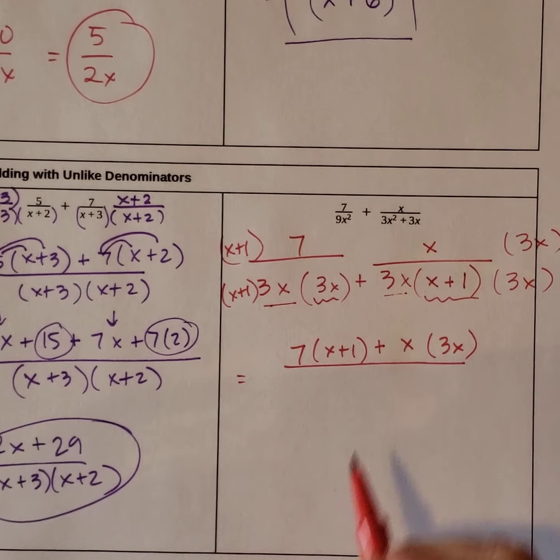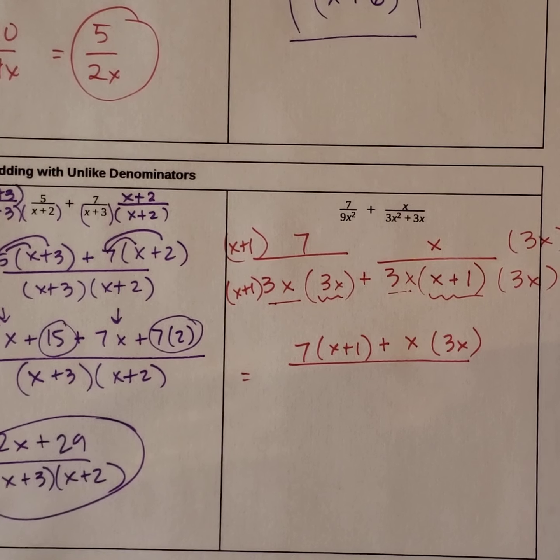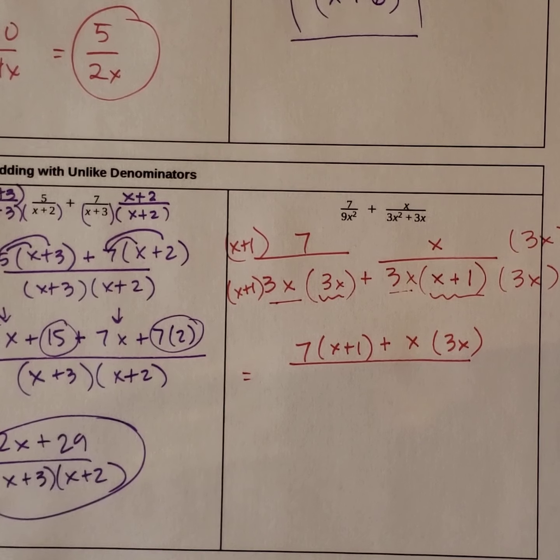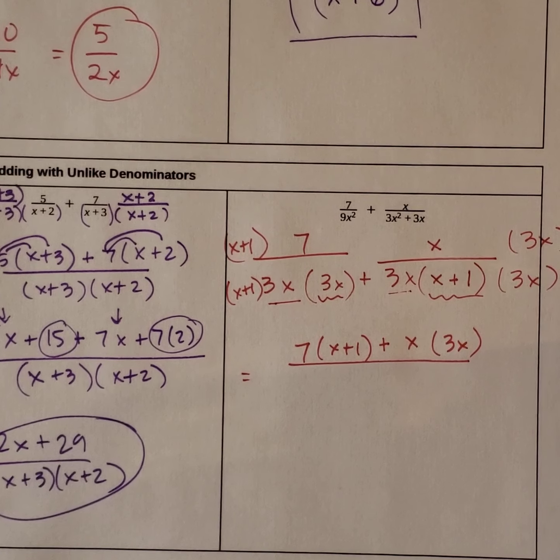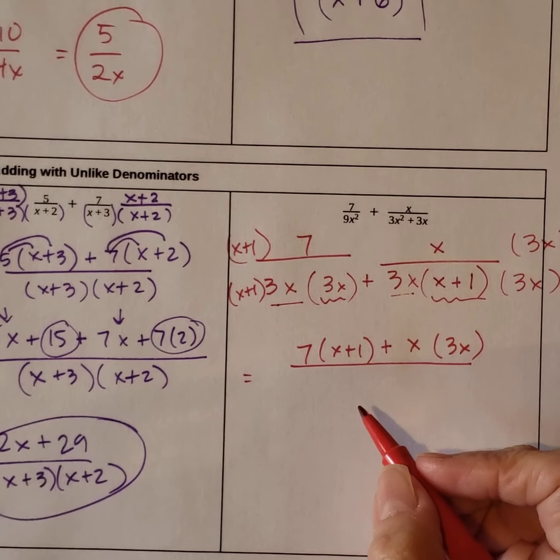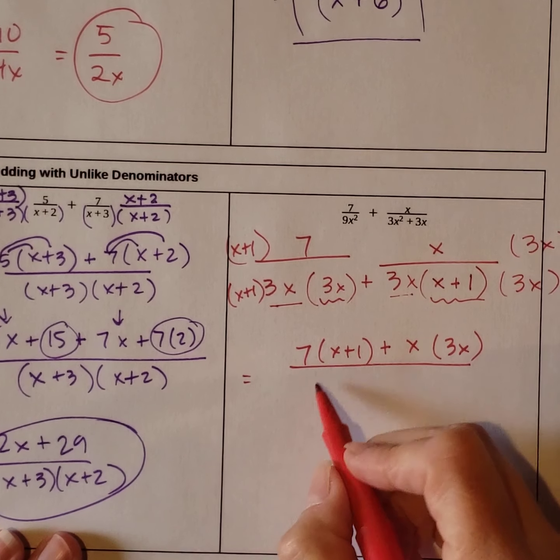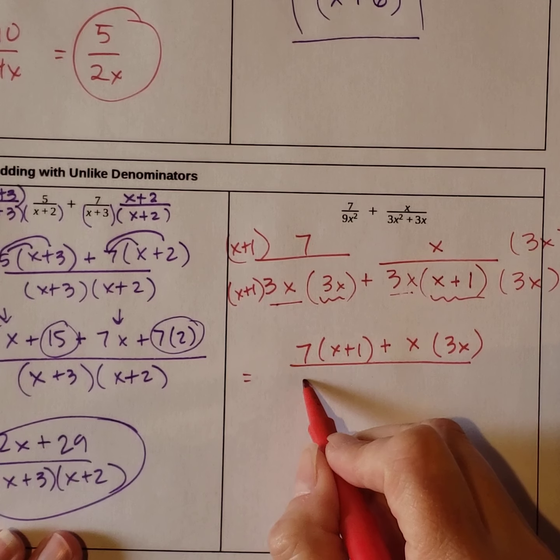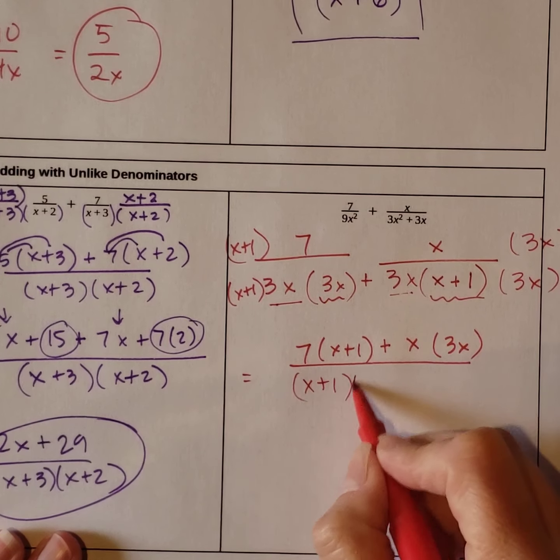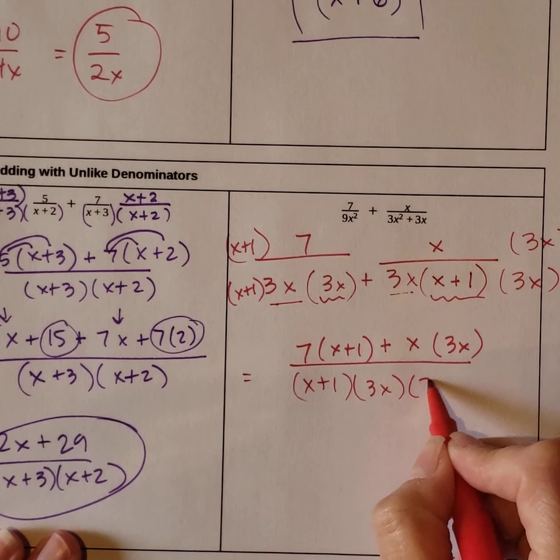Big Ideas might expect you to have it in a certain format. I'm not sure what that is. I will give it a look to make sure what Big Ideas might want you to do. So we have on the bottom x plus 1 times 3x times 3x.